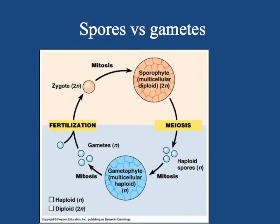The sporophyte is the 2n algal generation, meaning it's diploid because it has two sets of chromosomes in each cell. It has cells that undergo meiosis — reduction division — to make haploid 1n spores, so the chromosome number is cut in half. Those spores divide repeatedly through mitosis, the non-reduction division, and grow into a gametophyte. That gametophyte is haploid in chromosome number 1n, and as an adult, these gametophytes produce gametes, hence their name.